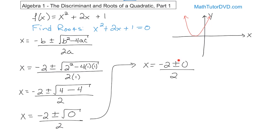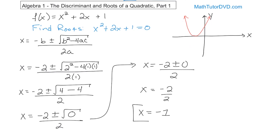We usually have two answers because we have plus or minus, but in this case, whether I add plus zero or minus zero, I'm going to get the same thing. I'm just going to have negative 2 over 2, so x is going to equal negative 1. I only got one answer from this quadratic equation, and that corresponds physically with what I see — because this graph just touches the x-axis in exactly one spot. It does not go below and cross in two spots like before.